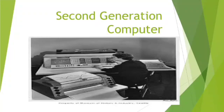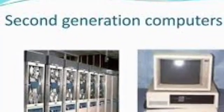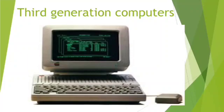Examples of second generation computers are IBM 7090, IBM 7094-1, and IBM 7094-2. These are the key details about the second generation computers.